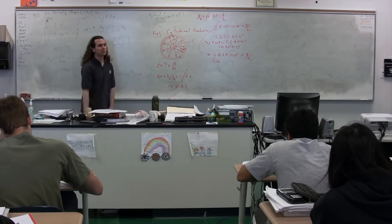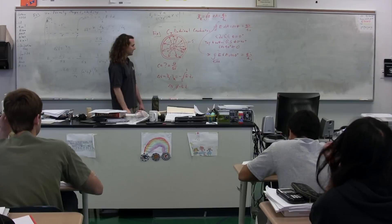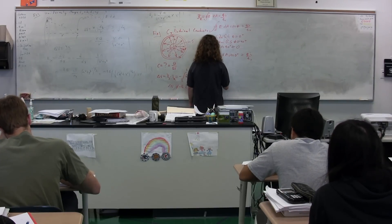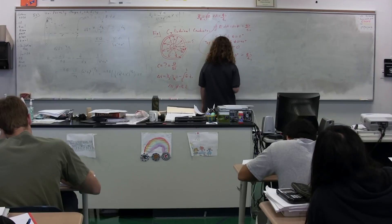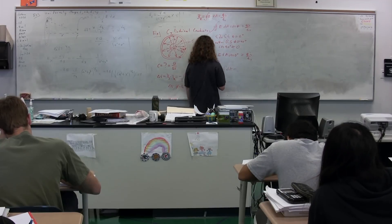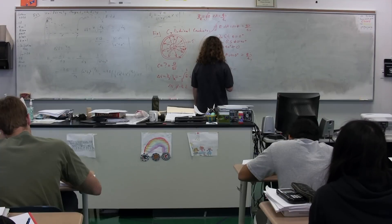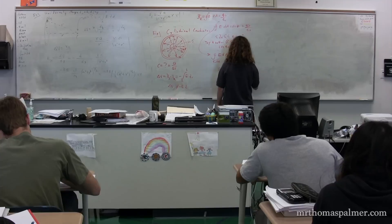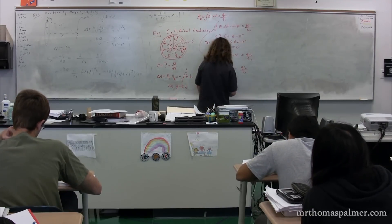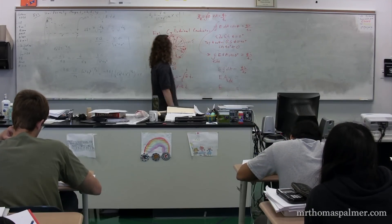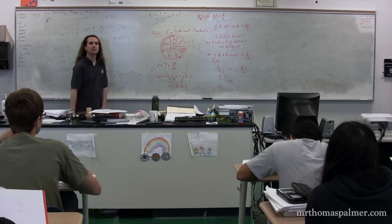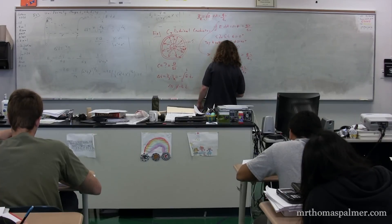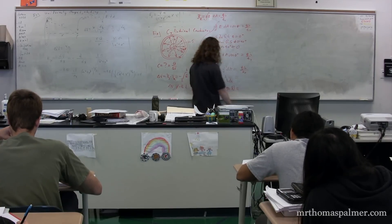We can take E outside the integral, giving us E times the closed surface integral of dA, which equals E times the area of the side. The area of the side equals 2 pi r times the length L of the Gaussian surface. So the left-hand side becomes E times 2 pi r L.